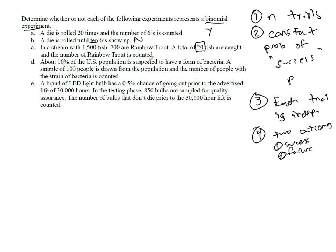About 10% of the U.S. population is suspected to have a form of bacteria. A sample of N equals 100 people is drawn from the population, and the number of people with a bacteria strain is counted. Okay, well, there are 100 trials.